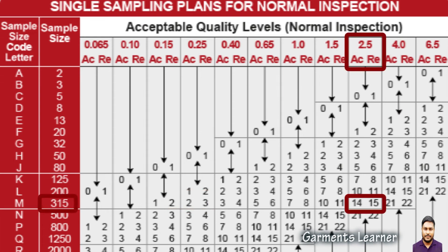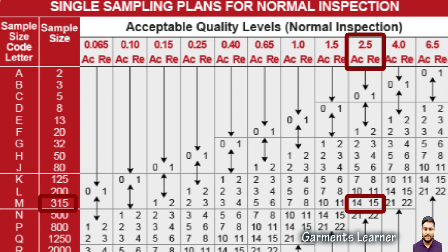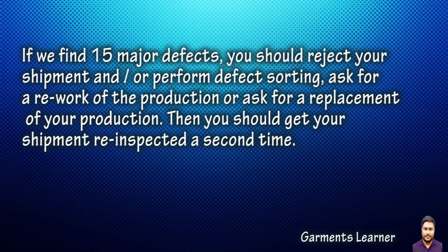The usual AQL values used are generally 0, 2.5, or 4 for critical, major, and minor defects respectively. For letter M with 315 pieces to inspect, the column for 2.5 AQL gives us the numbers 14 and 15. Thus, among a sampling size of 315 pieces inspected, the maximum number of major defects authorized is 14 pieces.